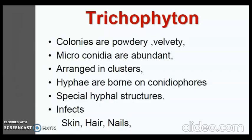Trichophyton colonies may be powdery, velvety or waxy with characteristic pigmentation. Microconidia are abundant, arranged in clusters along the hyphae or on conidiophores. Macroconidia are generally scanty, elongated with blunt ends, and are distinctively shaped in different species, useful for species identification. Some species have special hyphal characters such as spiral hyphae, racquet mycelium, and pectinate chandeliers. Trichophyton infects skin, hair and nails. Trichophyton rubrum is the most common species infecting humans, often causing chronic, treatment-resistant lesions.